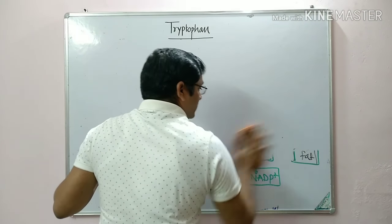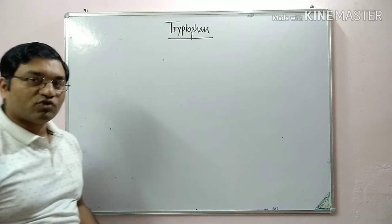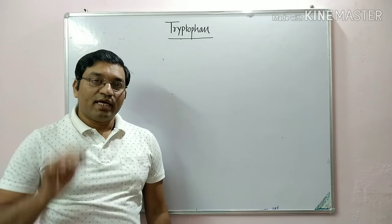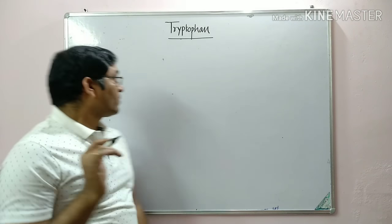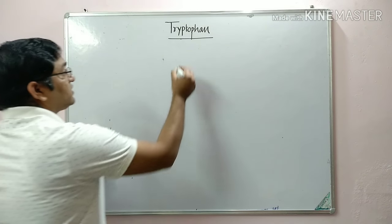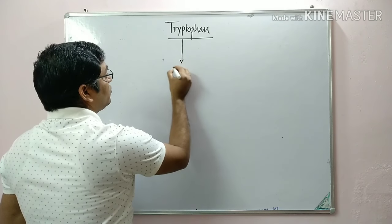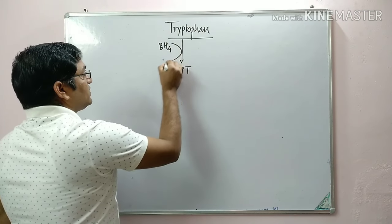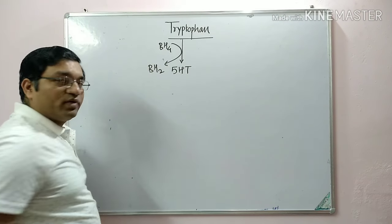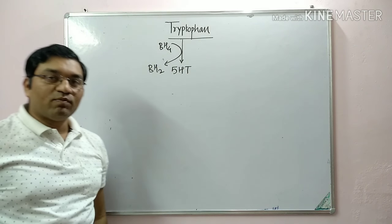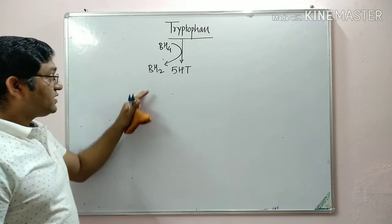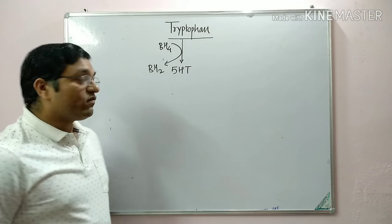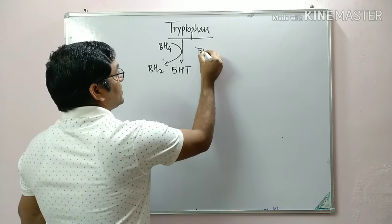In the serotonin pathway, we can compare it to the synthesis of epinephrine and norepinephrine — the reactions are exactly similar. In the first reaction, tryptophan is converted into 5-hydroxytryptophan. This is a tetrahydrobiopterin-dependent reaction; tetrahydrobiopterin is converted into dihydrobiopterin, which is regenerated with the help of NADPH-dependent dihydrobiopterin reductase. The enzyme is tryptophan hydroxylase, similar to phenylalanine hydroxylase.